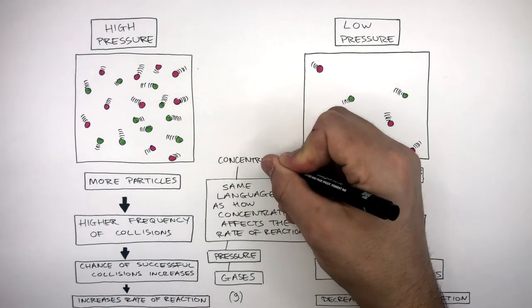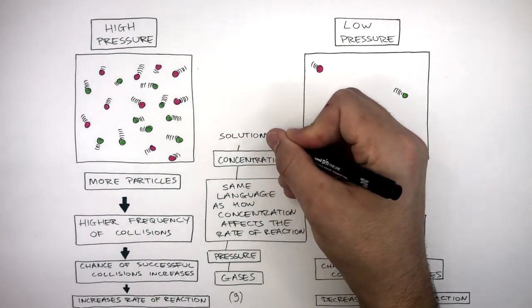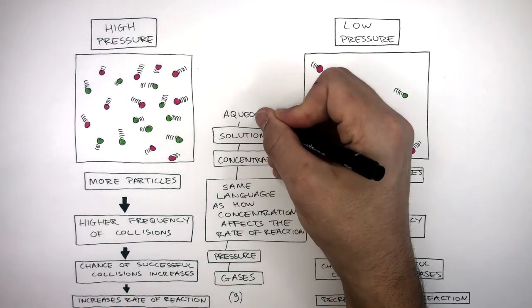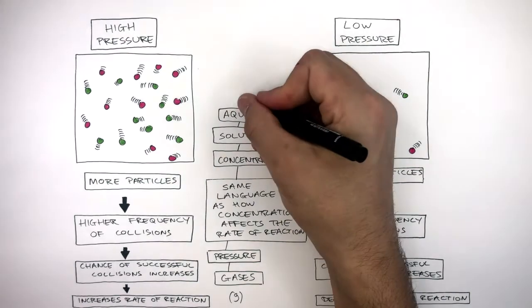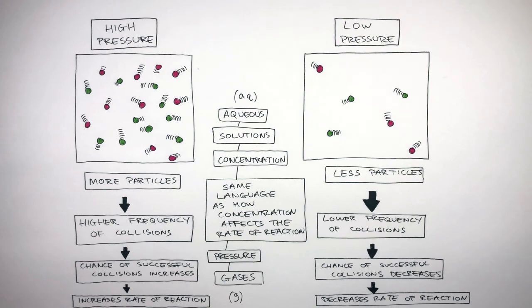Whereas concentration is to do with solutions. And these are aqueous, as the solute is dissolved in a liquid, such as water. To spot this, on a balanced symbol equation, you need to look for the symbol AQ. AQ in brackets means aqueous.